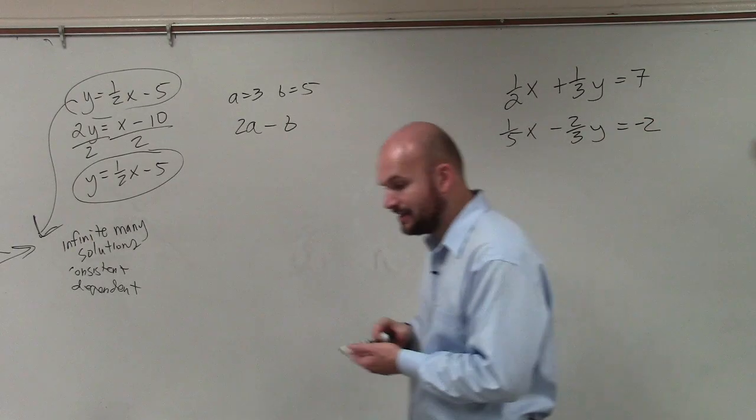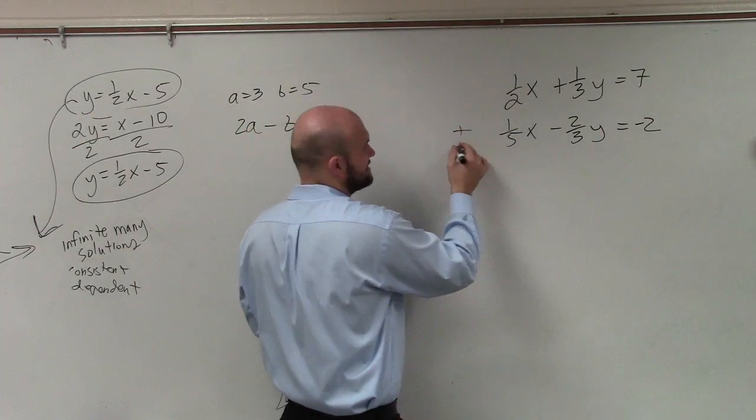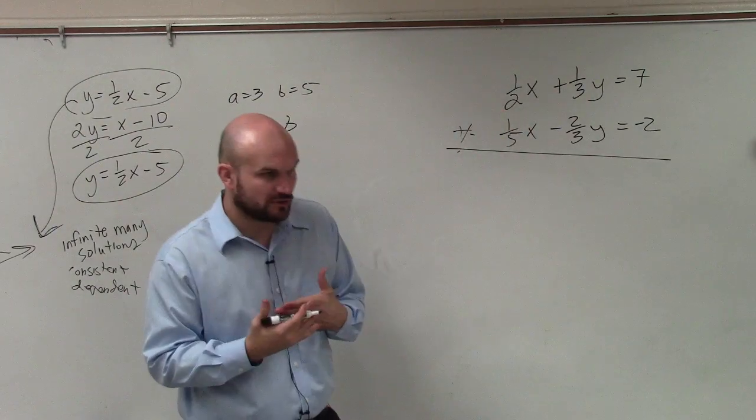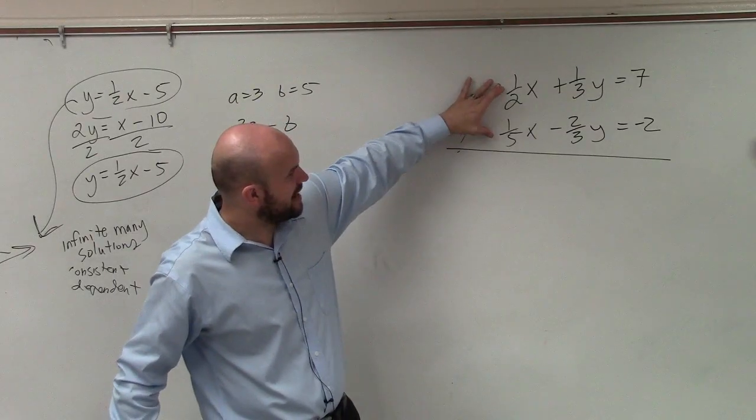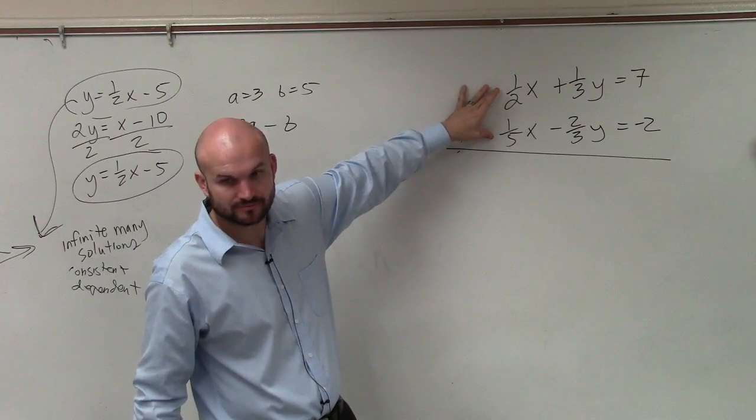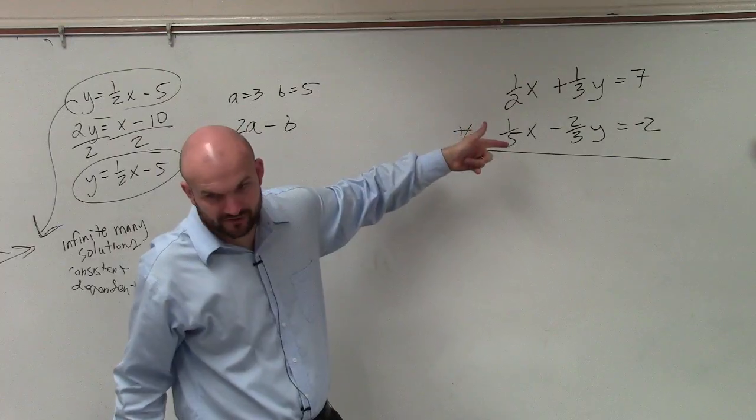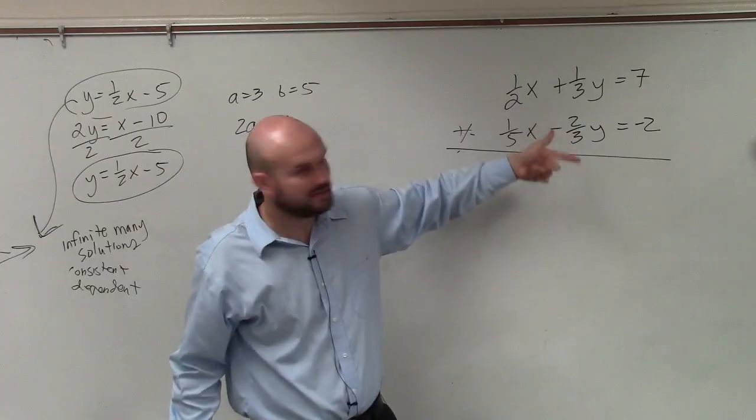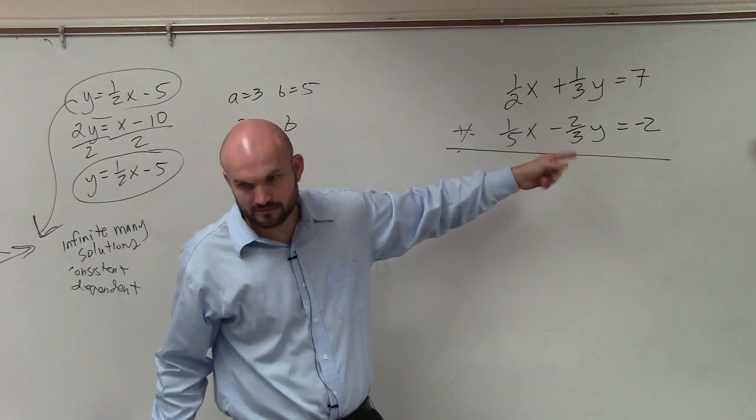So the next thing we want to look at is using elimination. Elimination basically is just adding or subtracting our two equations, and if we add or subtract these two equations, we want to be able to get a coefficient of 0. So if I add or subtract one-half x and one-fifth x, am I going to get 0x? Does one-half plus one-fifth give you 0? Does one-half minus one-fifth give you 0? No. What about one-third and two-thirds? Is one-third plus or minus two-thirds going to give you 0? No. So they're not going to give a 0.